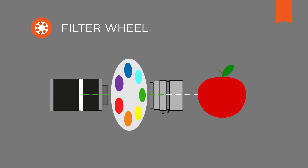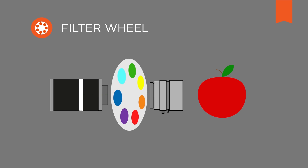Objects captured by filter wheel cameras are scanned sequentially, because the camera captures single wavelengths. For additional wavelengths, the filter wheel must be moved to the desired filter. This results in a reduced scanning speed, and therefore it is not usable on moving targets.